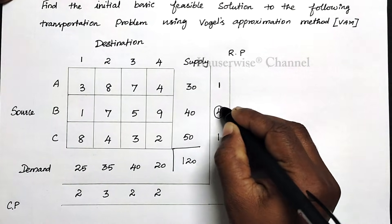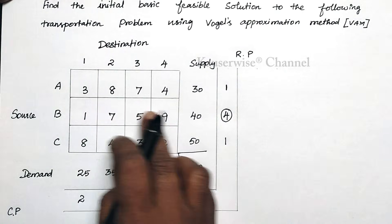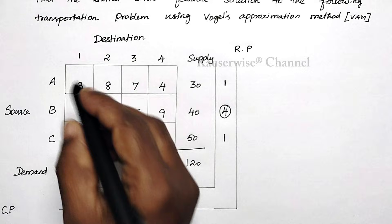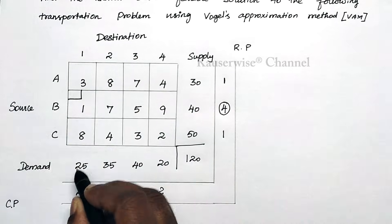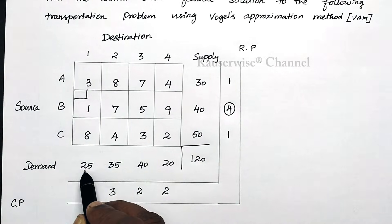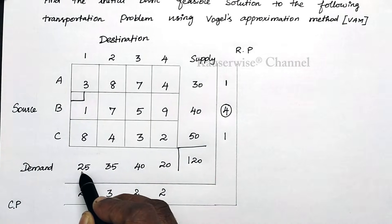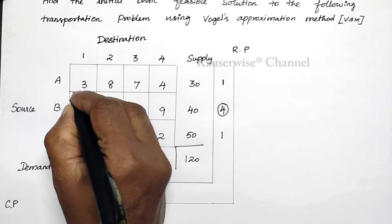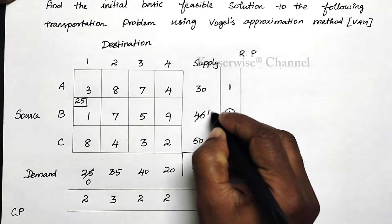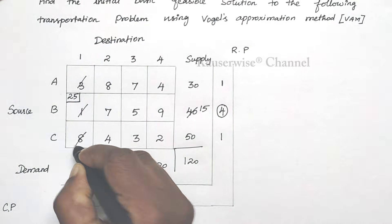I am going to select this row. In this row, the least cost is 1. Now I allocate by comparing demand and supply of this cell. Demand is 25, supply is 40 — minimum is 25, so we allocate 25 here. After allocating 25, demand becomes 0 and supply balance becomes 15. Since the demand is satisfied, cancel this column and repeat the same procedure.